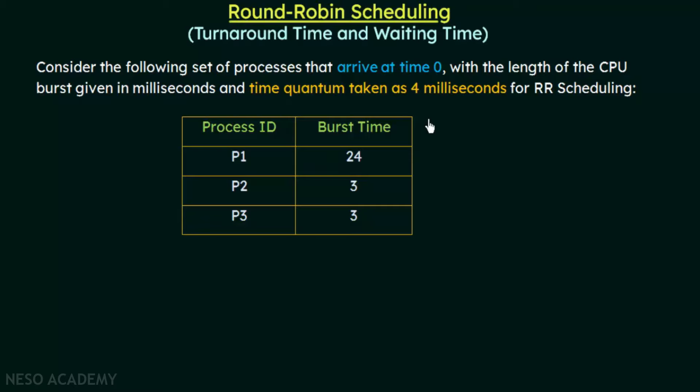In round robin scheduling we have a particular time quantum — a specific amount of time assigned to each process for execution. A process will be allowed to use the CPU for that quantum of time. Once that time period expires, the process will be preempted and the next process in the queue will be given the CPU, which will also be allowed to use the CPU for one time quantum, and so on.